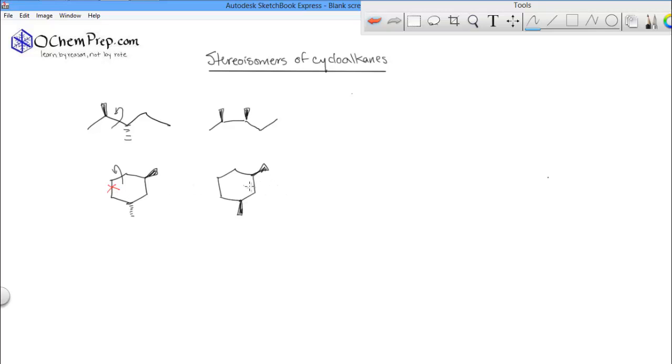So these two are what we call stereoisomers. And there are lots of different kinds of stereoisomers. This is one specific kind of stereoisomer. But the general definition is isomers that differ in arrangement in three-dimensional space.